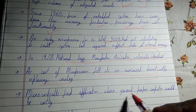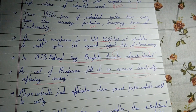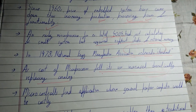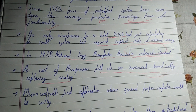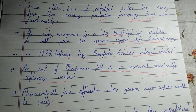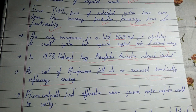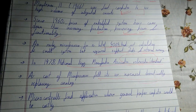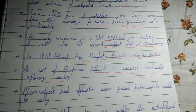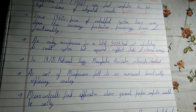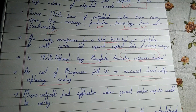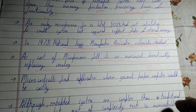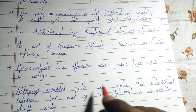Microcontrollers find application where a general-purpose computer would be costly. For example, if you just want to hear music you would take an iPod rather than buying a Mac laptop and playing a song on it. Similarly, if you just want to click a picture, you don't need a computer — a small camera is far less costly than a laptop.